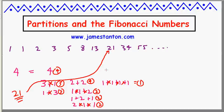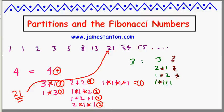Which, just by coincidence, happened to be a Fibonacci number. Let me do this again for the number 3. Let's look at all the partitions of 3, then replace the plus signs by multiplication signs and multiply. There's 3 itself; there's 2 plus 1, and 1 plus 2; and 1 plus 1 plus 1. Changing those to multiplication signs: 3, then 2 times 1 is 2, 1 times 2 is 2, and 1 times 1 times 1 is 1. So 3 plus 2 plus 2 plus 1 is 8 — a Fibonacci number!